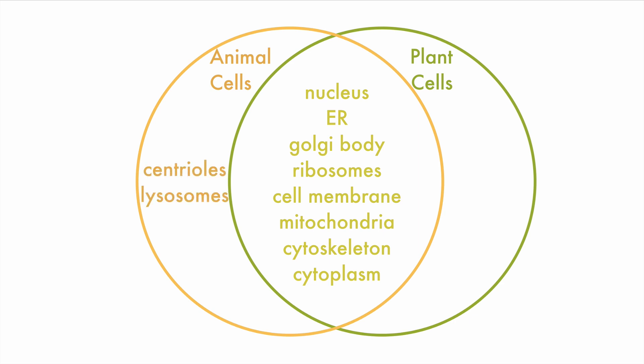The three major unique features of plant cells are the rigid cell wall, which surrounds the cell membrane, the large fluid-filled central vacuole, and plastids like chloroplasts, which carry out photosynthesis.